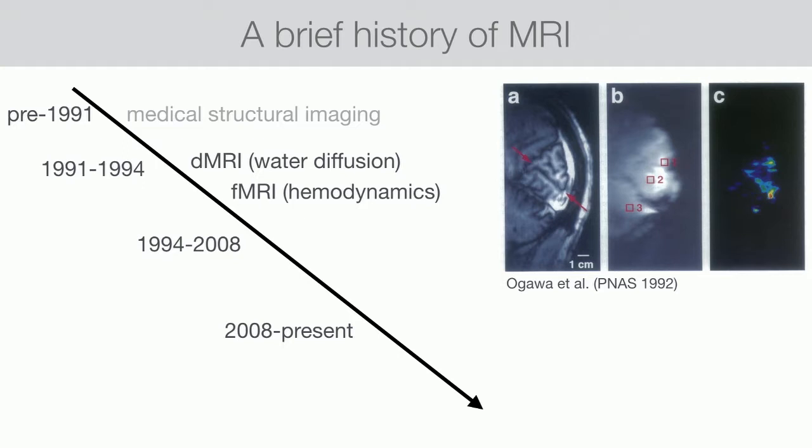In 1992, a series of papers showed that the MRI signal is actually sensitive to the blood oxygenation changes that happen as neurons fire. The very first paper showed that if you flash a checkerboard on a screen, you get activation in the early visual cortex in areas that you would expect. It really opened the door to using MRI as a research tool.